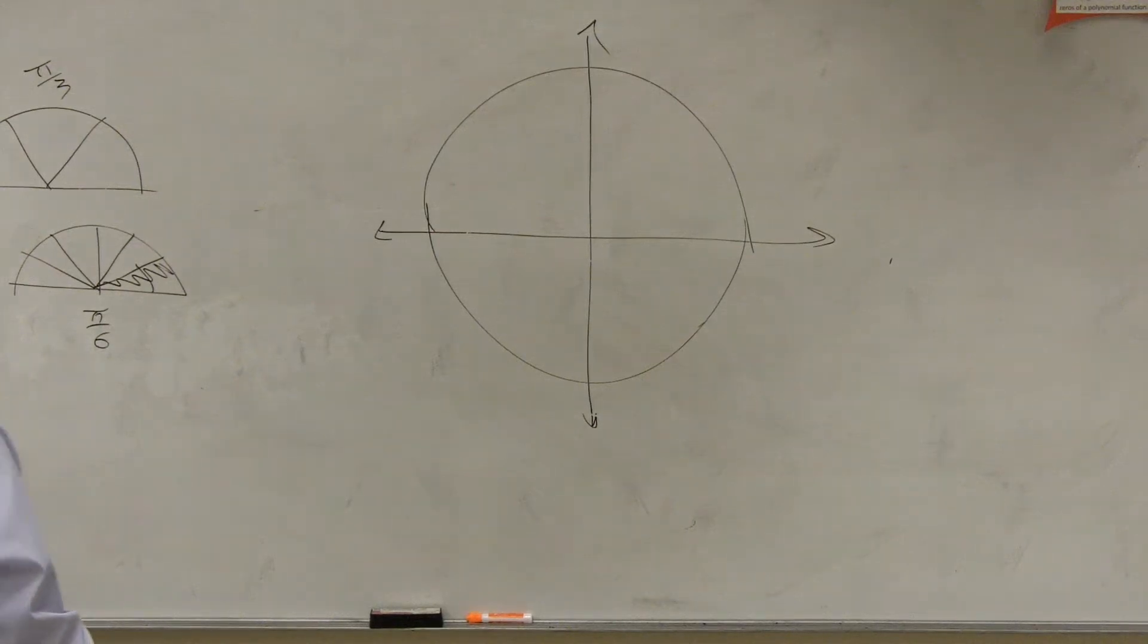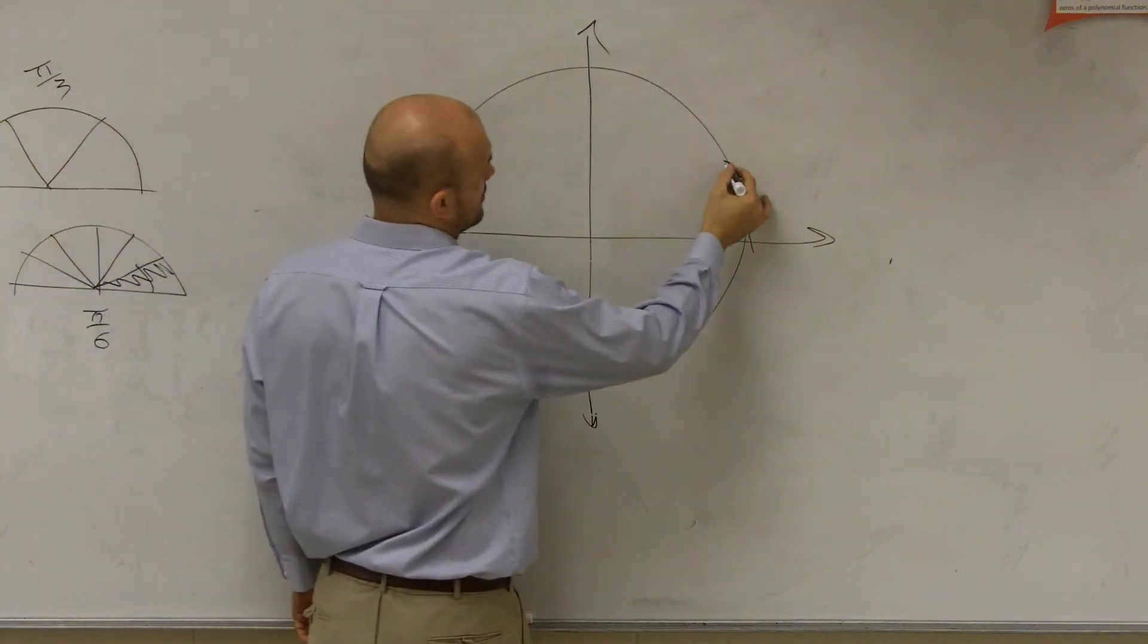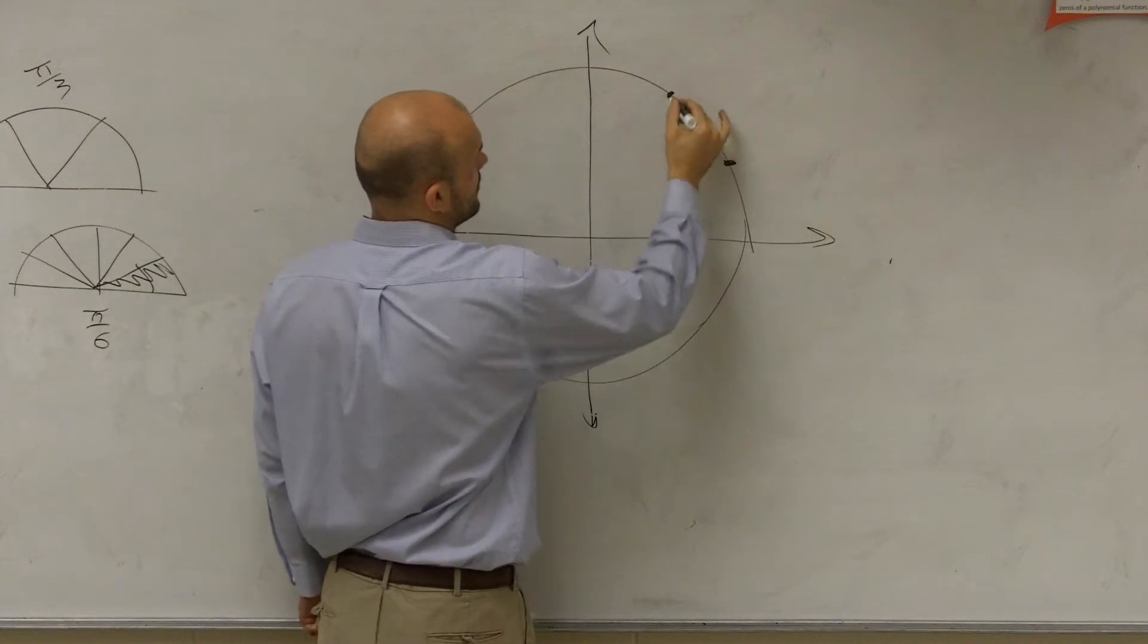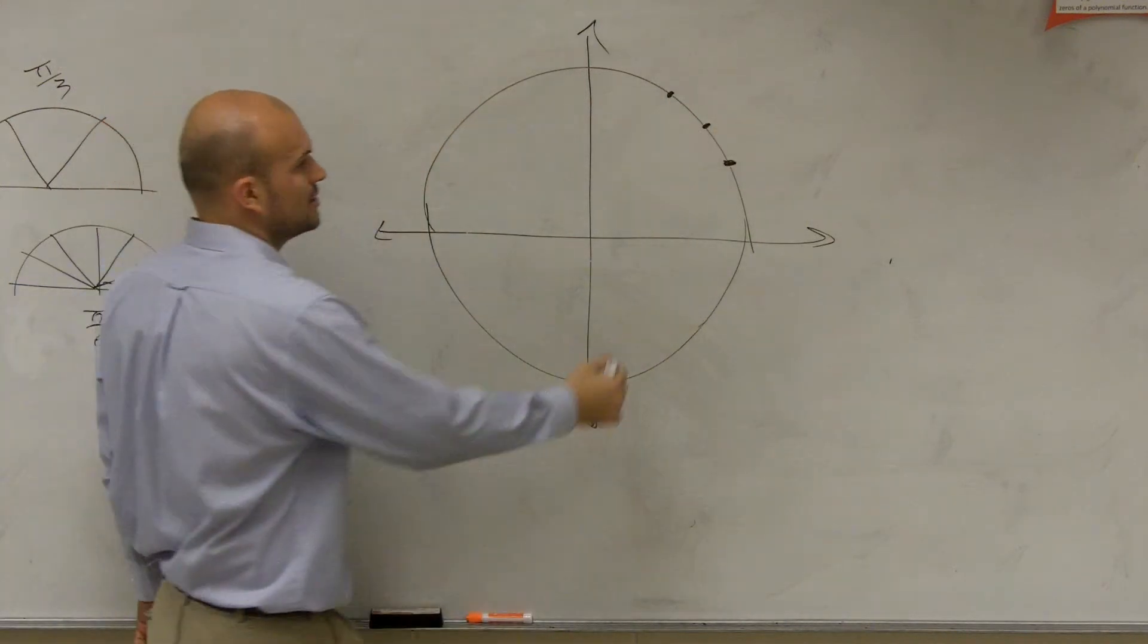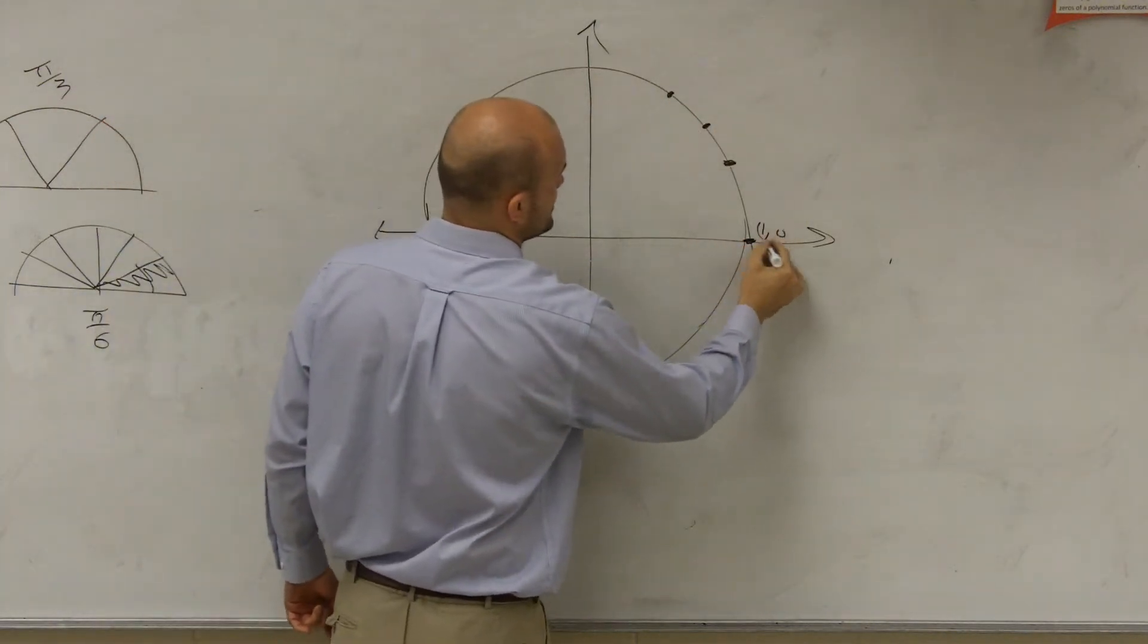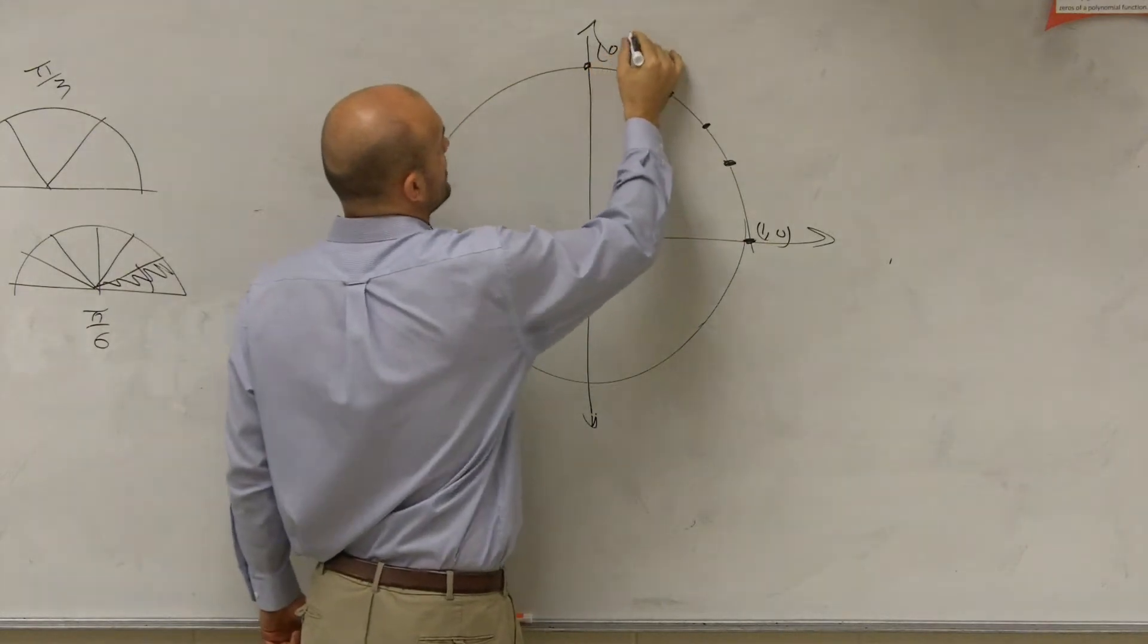So we use special triangles to show you guys these three points. One, two, three. We had those three points. We already know these points: 1 comma 0, hopefully, and 0 comma 1.